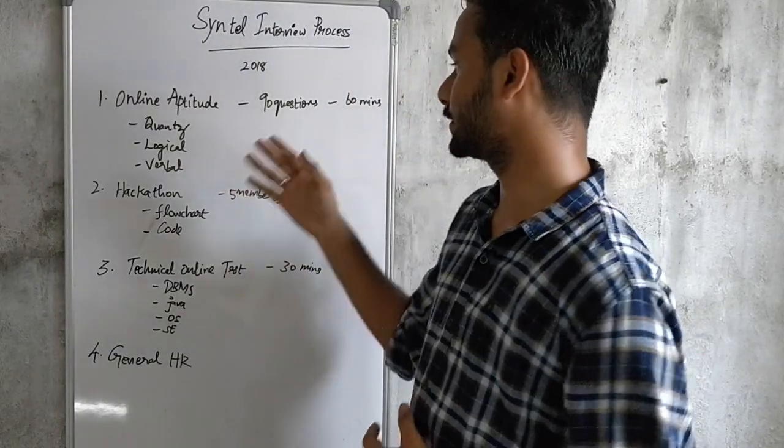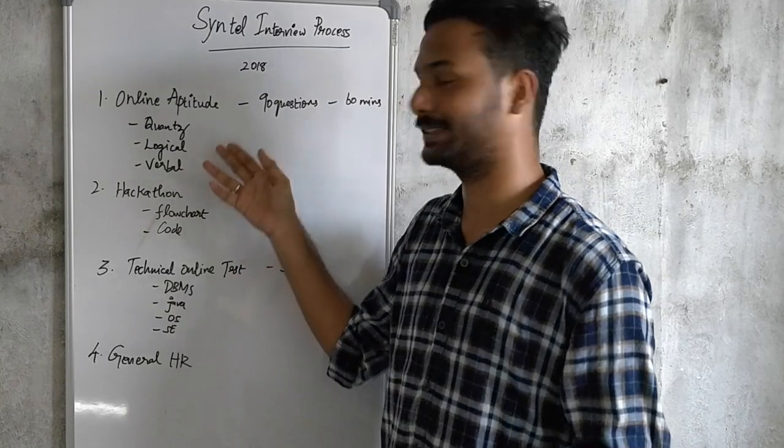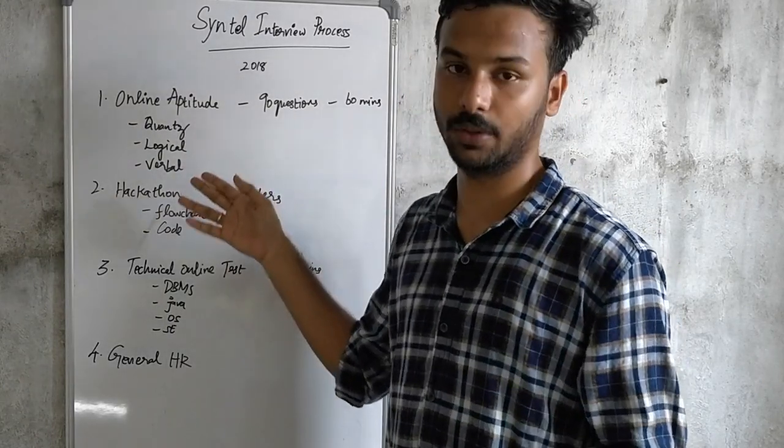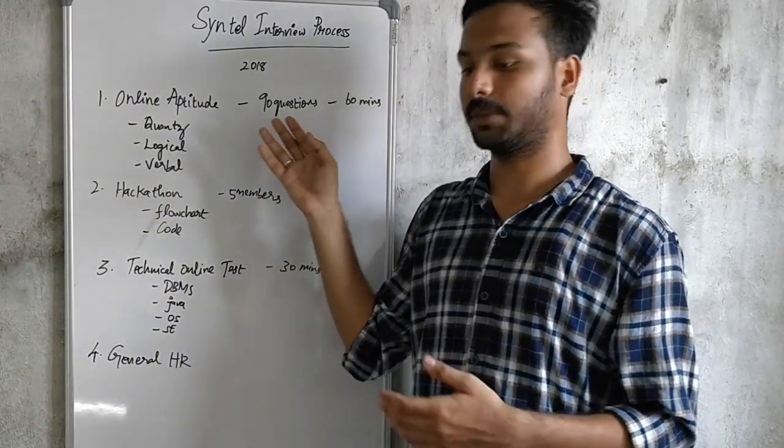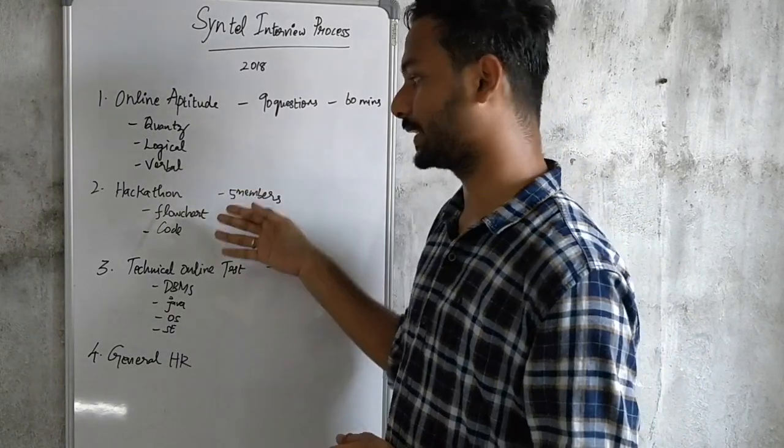First, the online aptitude test has 90 questions split into three sections: Quants, Logical, and Verbal. You have 16 minutes to complete it. Those who clear this round will proceed to the next round, which is the hackathon.